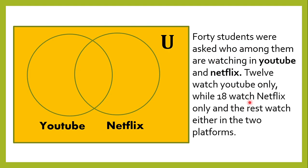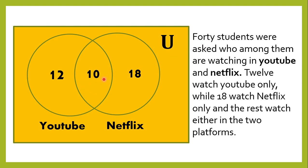Based on our given, we label our sets YouTube and Netflix. 12 goes in the YouTube-only region (Y minus N), and 18 goes in the Netflix-only region. For the rest watching both platforms, since we have 40 students total and 12 plus 18 equals 30, subtracting from 40 gives us 10. Those 10 students go in the middle, meaning they watch both YouTube and Netflix. Here is our completed Venn Diagram.